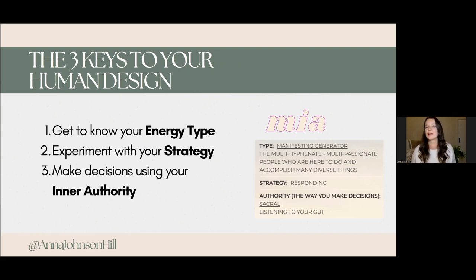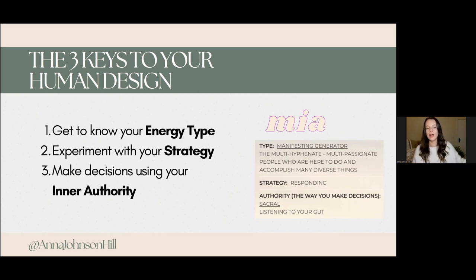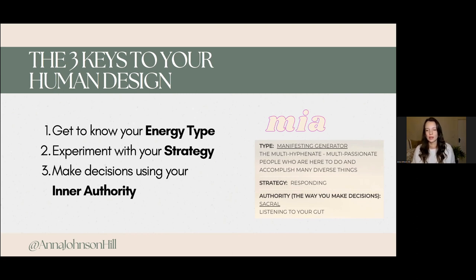So let's have a look at Mia's chart. The three keys to everyone's human design — the three things I want you to take away from this — are: get to know your energy type, experiment with your strategy, and start making decisions using your inner authority. From my story before, you heard that my inner authority tells me to make decisions based on instinct, quickly in the moment.